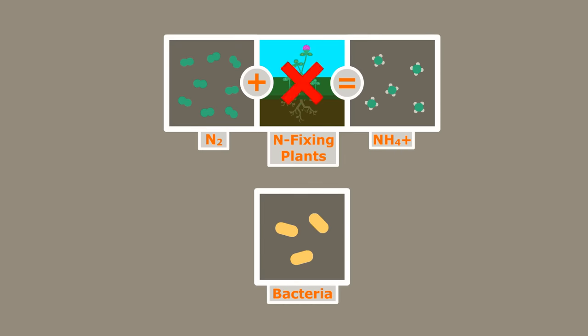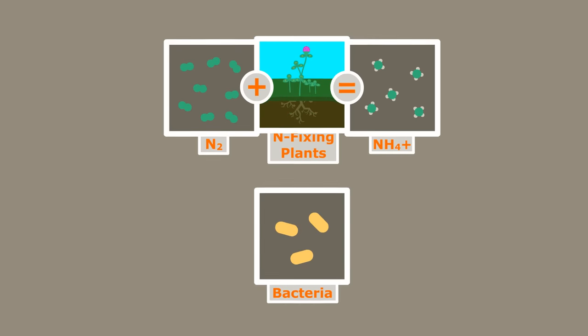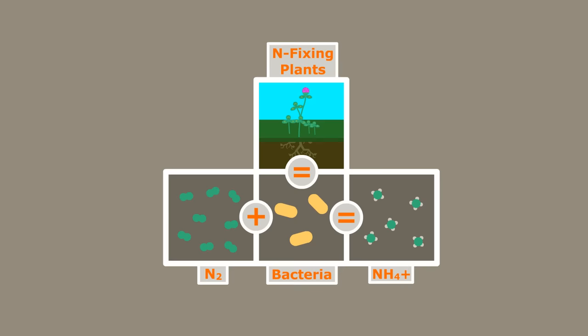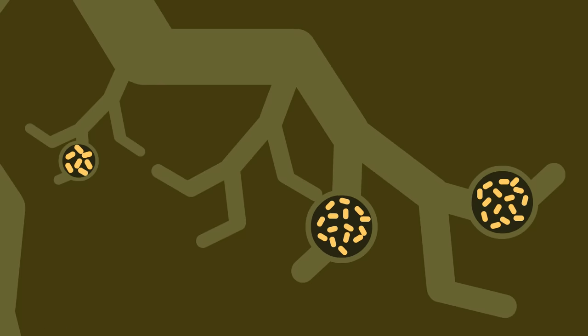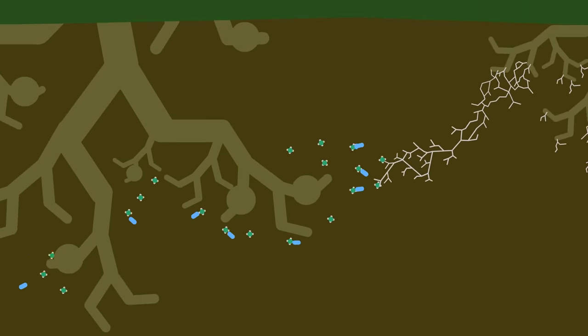Believe it or not, nitrogen-fixing plants don't fix nitrogen. Rather, they create habitat for the bacteria that do. The roots of this clover plant have little nodules that house huge amounts of nitrogen-fixing bacteria. The ammonium that these bacteria create slowly releases into the soil for neighboring plants and microorganisms to use.